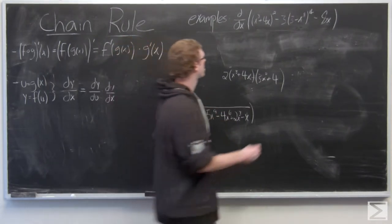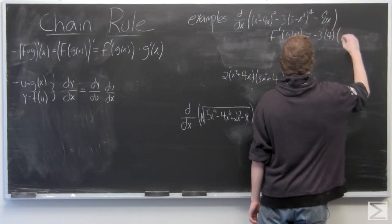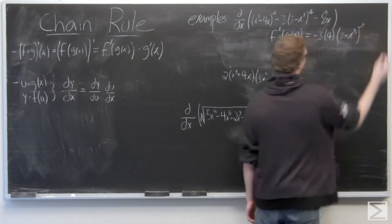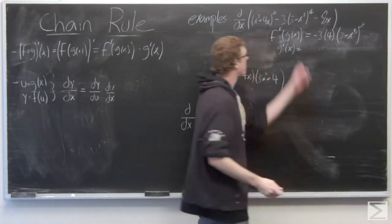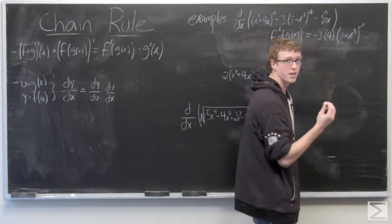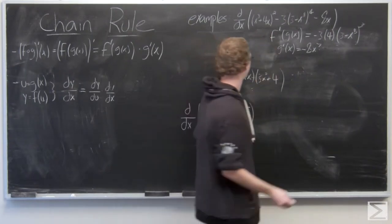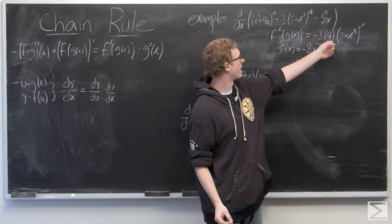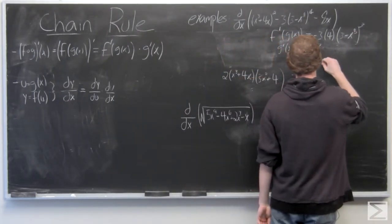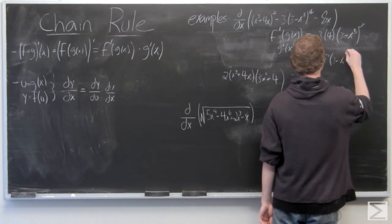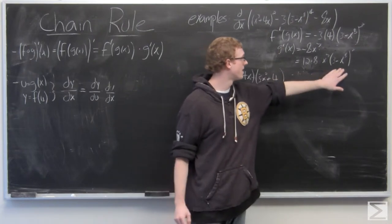Let's take the derivative of the entire thing first, and then we'll look at the derivative of what's on the inside in g of x. We have a constant, so that's just going to be zero, and we have negative x to the eighth, which gives negative 8x to the seventh. If we put them both together, the derivative is going to be negative 12 times negative 8, so we treat that as a positive number.